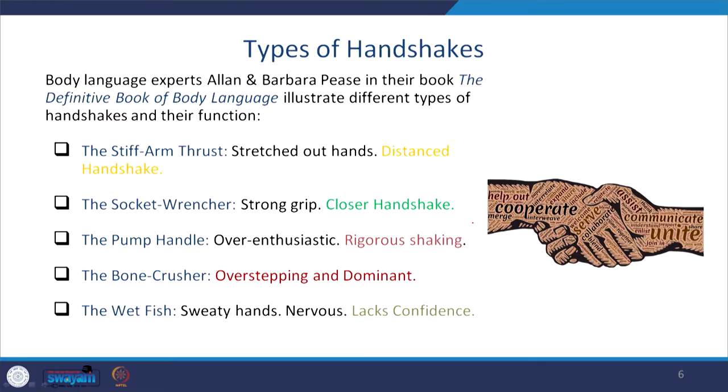Let us spend some time on the types of handshakes, which are quite common in public speaking situations. There is a very seminal book by Allan Pease and Barbara Pease titled 'The Definitive Book of Body Language,' where they illustrate different types of handshakes and their functions. Even the way a person shakes hands actually denotes their culture — the way your handshake is received and the way you offer it has a lot of meaning.